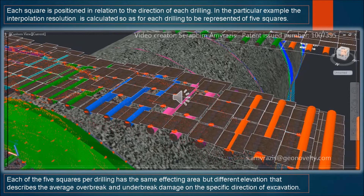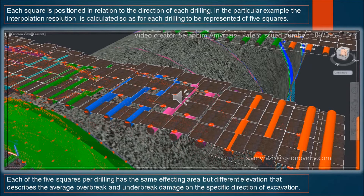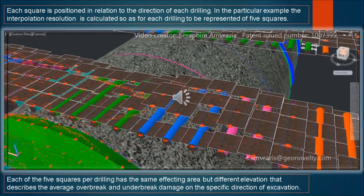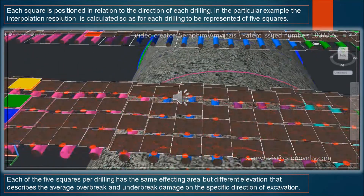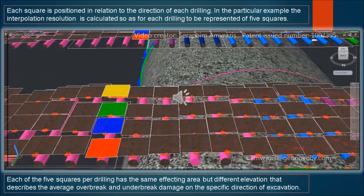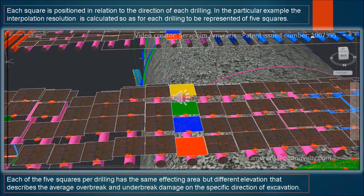Each square is positioned in relation to the direction of each drilling. In this particular example, the interpolation resolution is calculated so that each drilling is represented by five squares. Each of the five squares per drilling has the same effecting area but a different elevation that describes the average overbreaks and underbreaks damage on the specific direction of excavation.